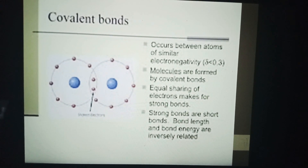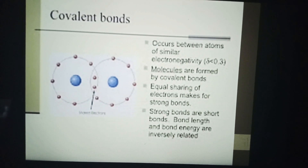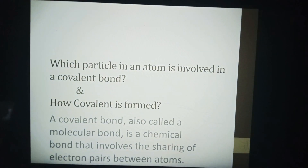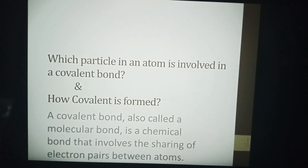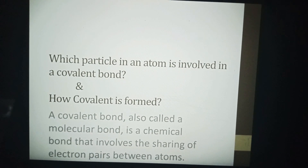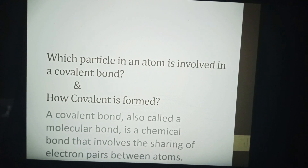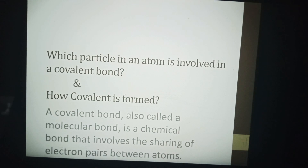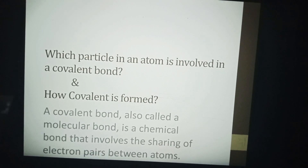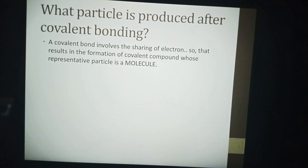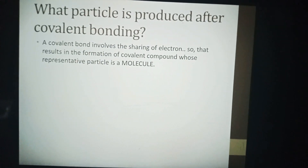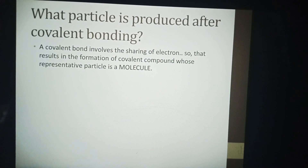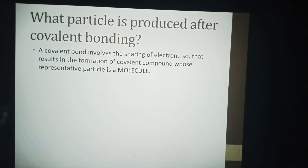Strong bonds are short bonds — bond length and bond energy are inversely related. Which particle in an atom is involved in a covalent bond, and how is a covalent bond formed? A covalent bond, also called a molecular bond, is a chemical bond that involves the sharing of electron pairs between atoms. What particle is produced after covalent bonding? The sharing of electrons results in the formation of a covalent compound.